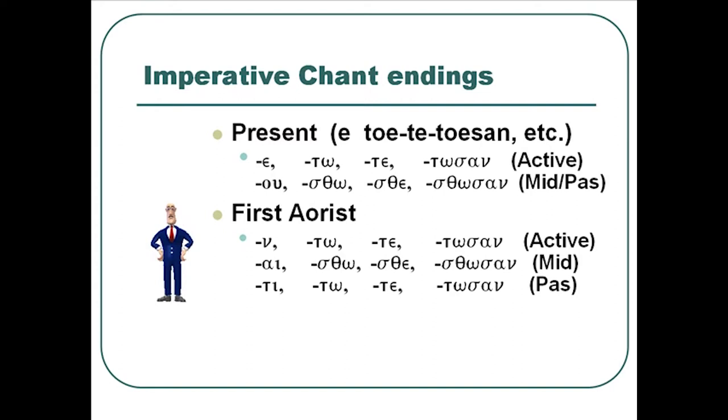Now let's put this all together. And it's e, toe-te-tōsan, ou-tho-tho-thōsan, n, toe-to-tōsan, i, toe-to-tōsan, t, toe-to-tōsan. And one more time: e, toe-te-tōsan, ou-tho-tho-thōsan, n, toe-to-tōsan, i, toe-to-tōsan, t, toe-to-tōsan. So the real difficult part with this is remembering the E-U-N-I-T to get started with and then the others flow off of that. So this is the chant for the imperative. Learn it so you can give orders even in your sleep.